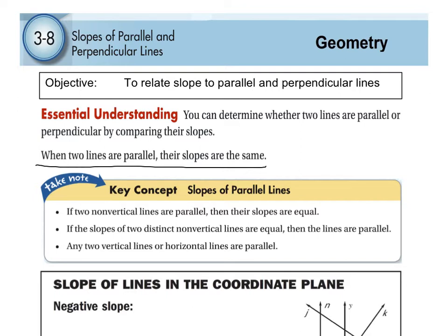A little review: how do you find slope? Remember, slope is the letter M. If I have two ordered pairs, x1, y1 and x2, y2, we are going to take and subtract the y values — y2 minus y1 — divided by the subtraction of the x values to find the slope. Make sure you have that written down because you're going to have to find the slope of certain lines.